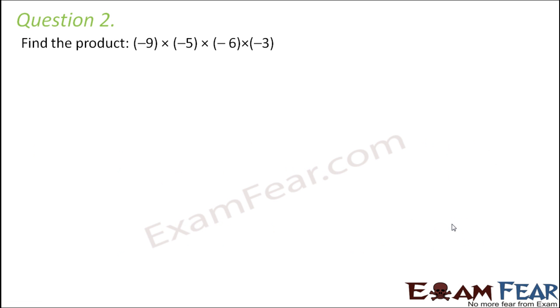Question number 2. Find the product minus 9 multiplied by minus 5 multiplied by minus 6 multiplied by minus 3. So here how many negative integers do you have? You have 4 negative integers. Therefore the sign of the final product would be positive. So all we need to do is just need to multiply them. So 9 into 5 is 45 and 6 into 3 is 18. So this is equal to 810.